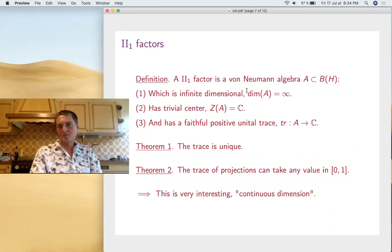So now let's go into these factors. Our definition: it's a von Neumann algebra with trivial center, infinite-dimensional, not finite-dimensional matrix algebras. And the important explanation is that there is a trace. One can prove that this trace is actually unique.